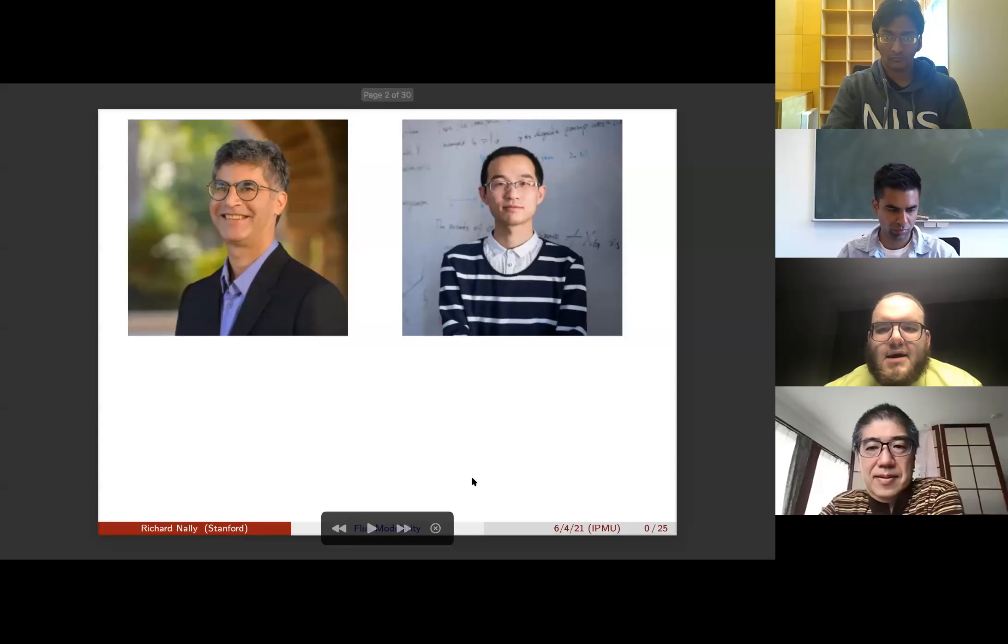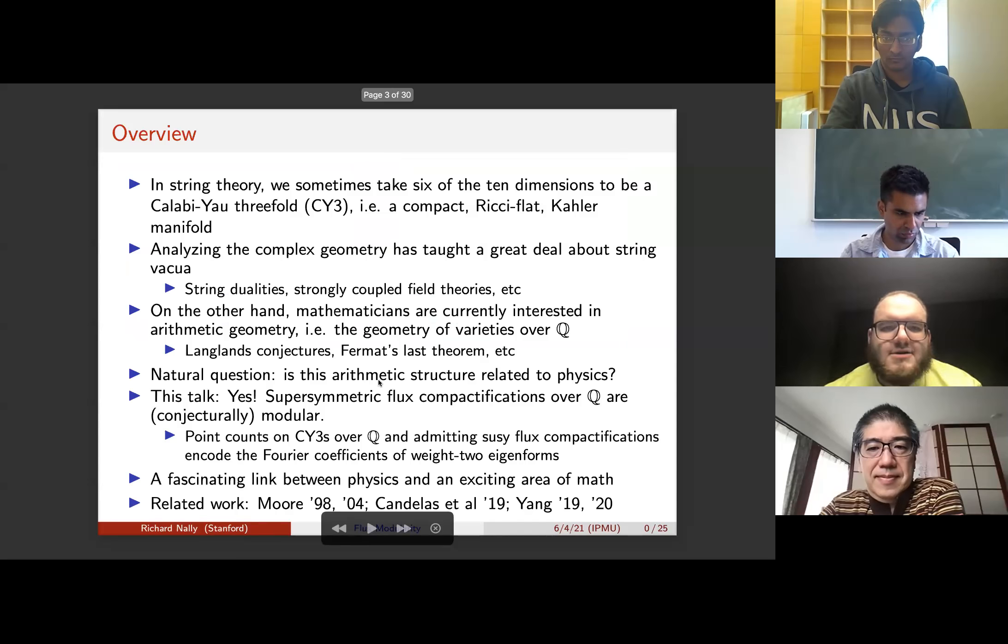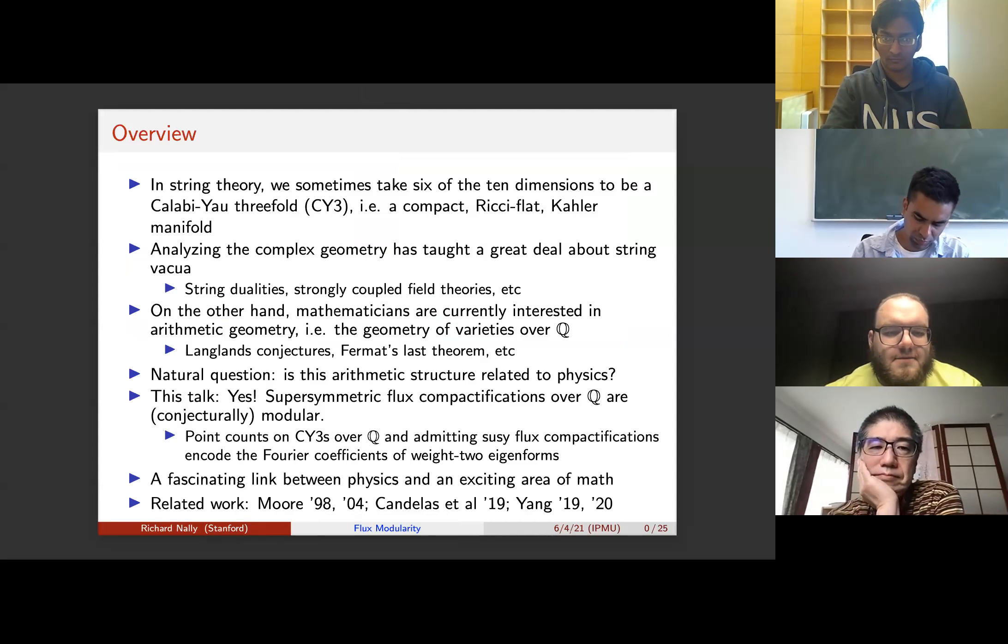So here we have my collaborators, Shamit and Wenjia. And so the basic setting for this talk is going to be compactification of 10-dimensional string theory down to four dimensions on a Calabi-Yau threefold. And for concreteness, the Calabi-Yau threefold is a compact Ricci-flat Kähler manifold.